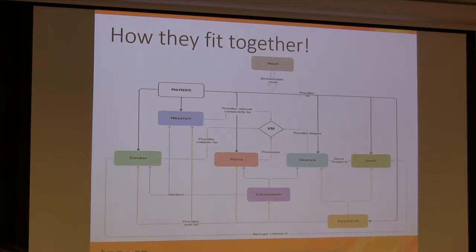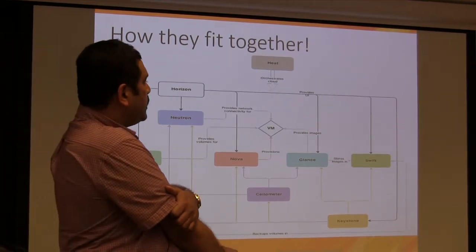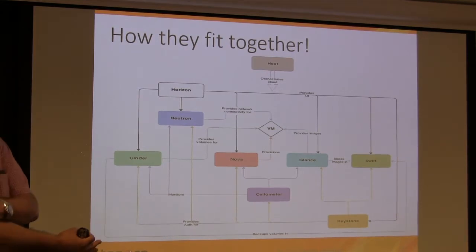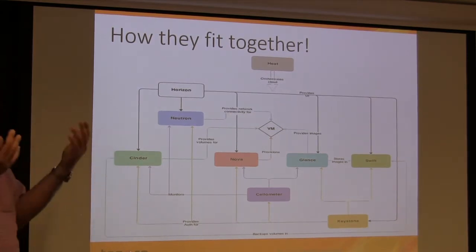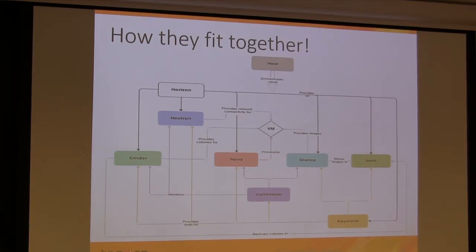Swift is a kind of unlimited volume type of storage — it's an object store similar to Amazon S3. Cinder is a block store, like file-system-mounted EBS. Any questions about terminology or what these projects are? I'll keep using the same terms; you'll get familiar with them by the end of the talk.